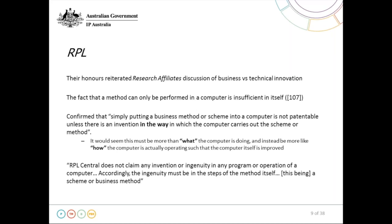That's not to say every computer implemented invention requires an improvement in the computer as such. Where there's generic computer implementation of some process, the substance of the invention would most likely lie in that process being generically computer implemented. A process that's generically computer implemented can well be patentable subject matter — but in the context of a pure business scheme, that's when it would fail the necessary tests. Later in the presentation I'll identify situations where we continue to allow claims to generically computer implemented software type inventions where the process itself is patentable subject matter.